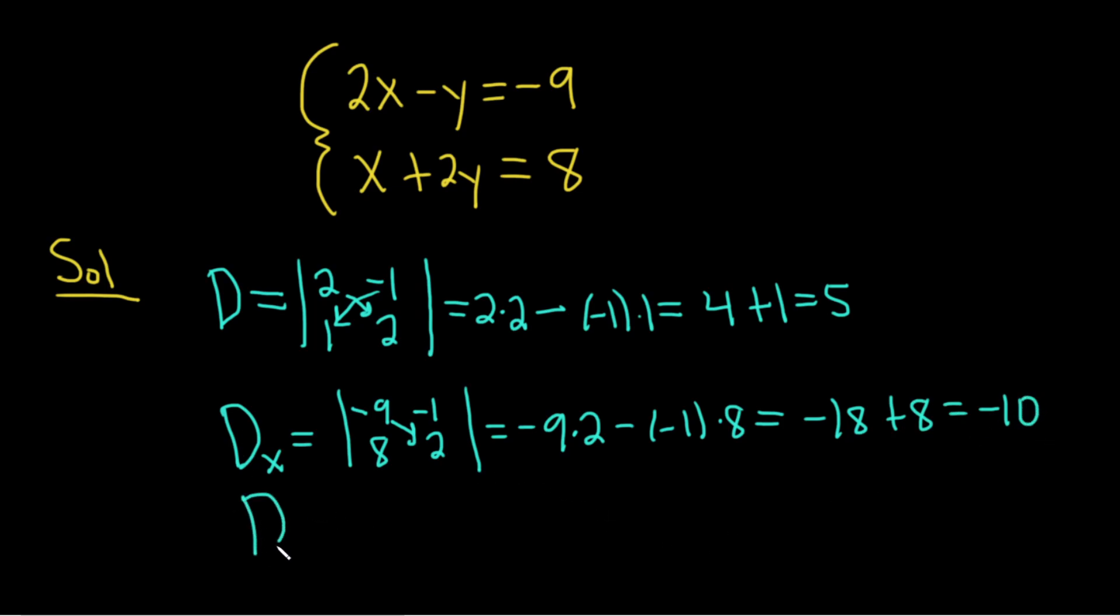And last but not least, Big D sub y. So in this case, we keep the x's, so 2 and 1. But we replace the y's with these numbers here. So you take the y's and replace them with these. So it'll be negative 9 and 8.